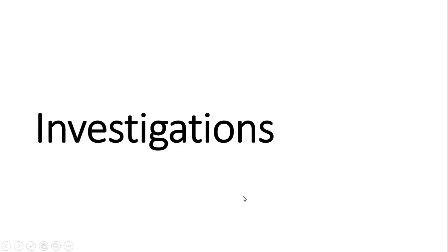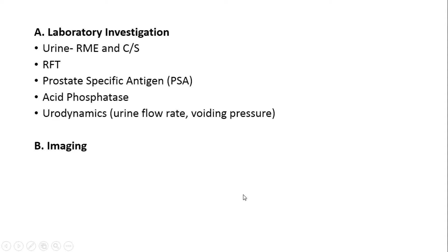The investigations to diagnose BPH can be categorized as laboratory investigations and imaging. Laboratory investigations include urine routine microscopic examination and culture and sensitivity — to detect hematuria and urinary tract infection respectively. Renal function tests (RFT), including sodium, potassium, urea, and creatinine, help identify obstructive uropathy features. Prostate-specific antigen (PSA), acid phosphatase, and urodynamics will be discussed in subsequent slides.